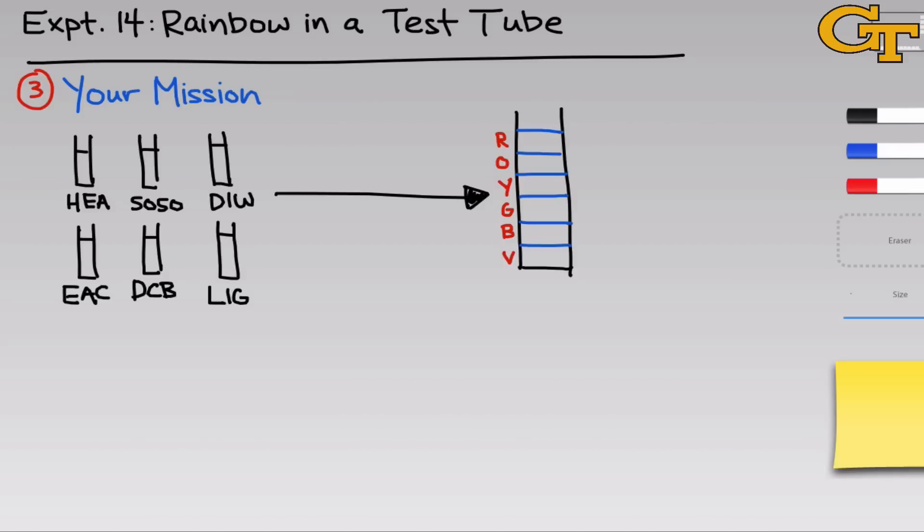As we discussed previously, for two layers to sit on top of one another without intermixing, the adjacent layers have to be immiscible — so red has to be immiscible with orange, orange with yellow, yellow with green, and so on. Note that non-adjacent layers, such as red and yellow, do not necessarily have to be immiscible with one another.